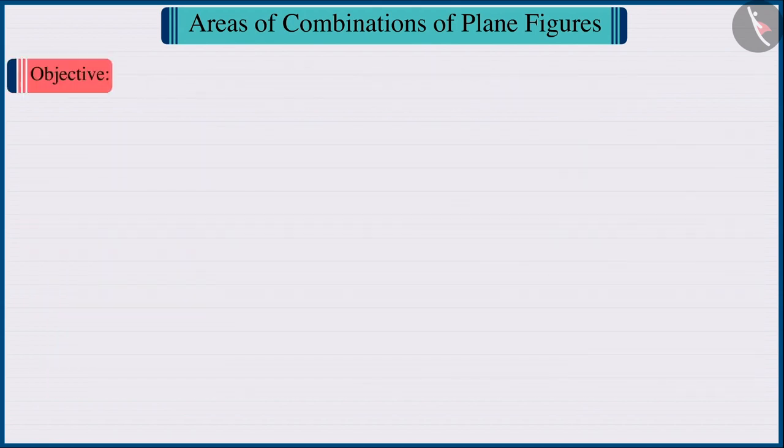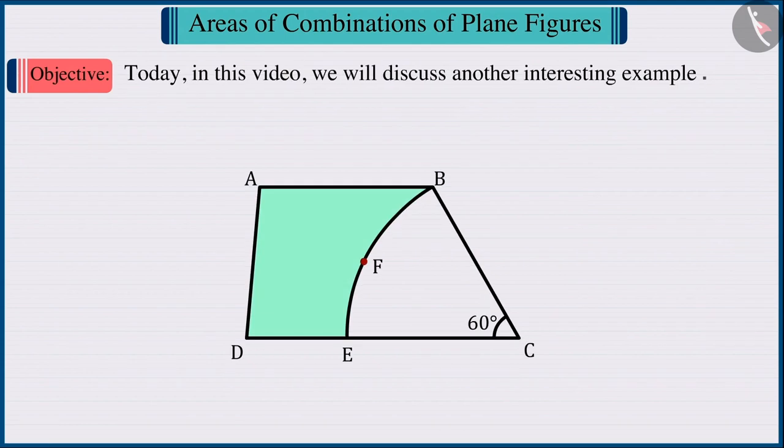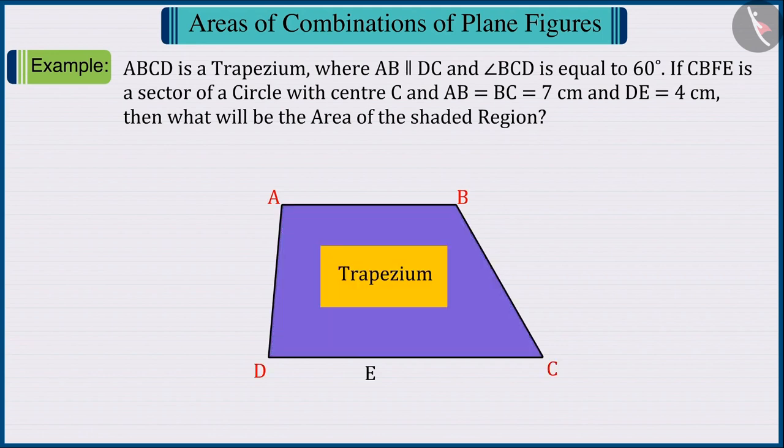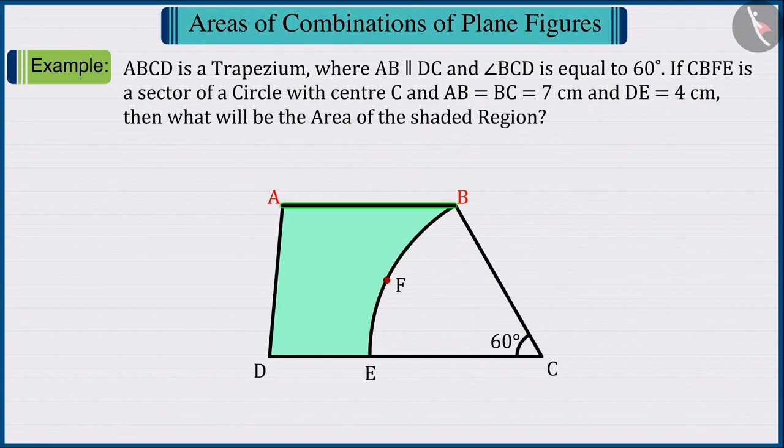Today, in this video, we will discuss another interesting example. In the given figure, ABCD is a trapezium where AB is parallel to DC and the measure of angle BCD is 60 degrees.